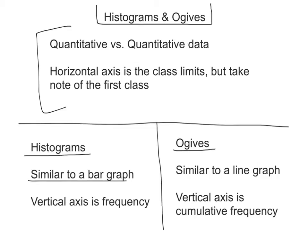And my vertical axis, unlike ogives, will be based on the frequencies. Ogives on the other hand are very similar to a line graph. And where they differ from histograms besides that is that we're talking about cumulative frequency now for ogives.